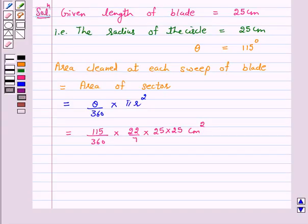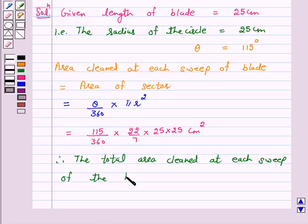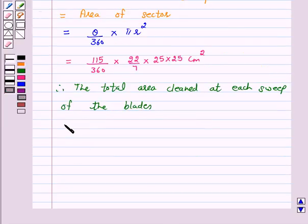Here in the question it is given that there are two wipers and they do not overlap. Then the total area cleaned at each sweep of the blades is equal to 2 into 115 upon 360 into 22 by 7 into 25 into 25 cm square.